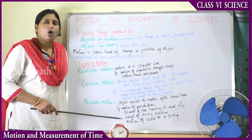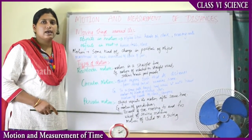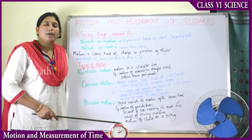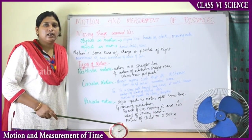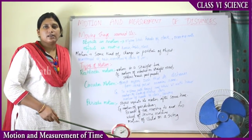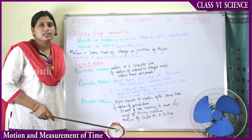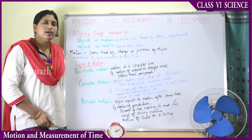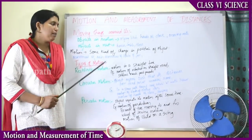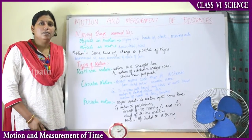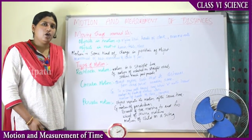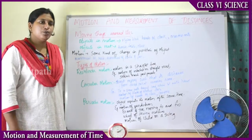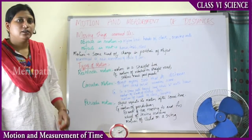That is the basic difference by which we can tell that objects are at rest and objects are in motion. Motion is nothing but some kind of change in the position of the object. Now, what are the types of motions?